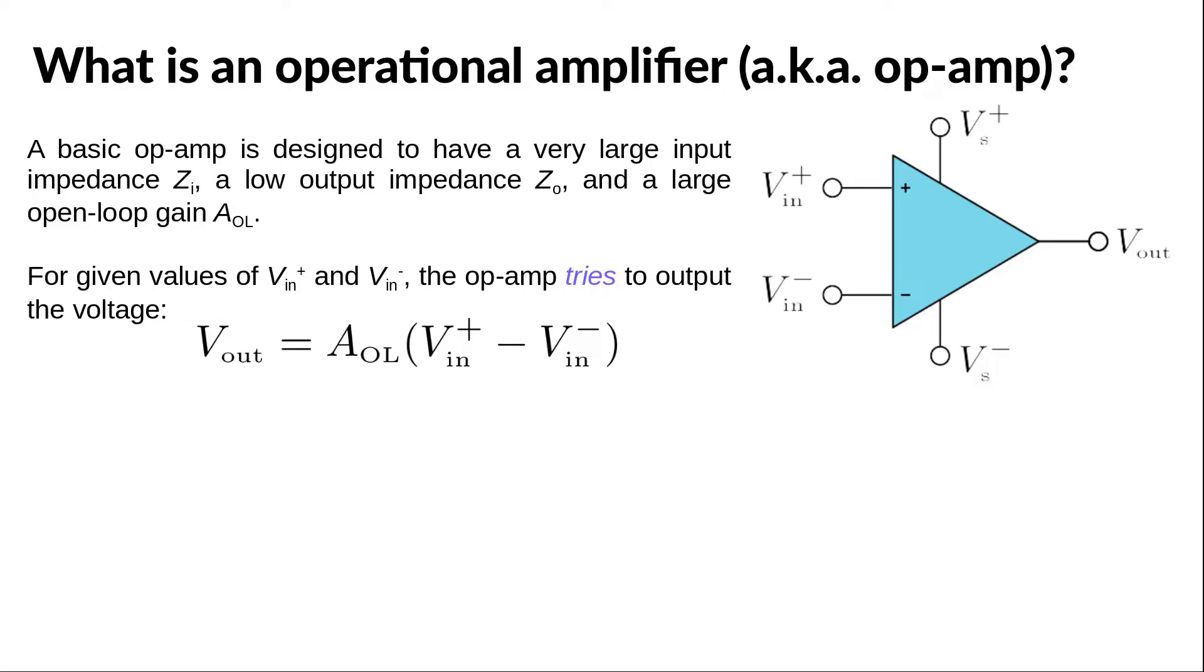We are going to see what this means. The task of the op-amp is very simple. For given input voltages, V in plus and V in minus, it tries to output a voltage equal to the difference between those voltages, multiplied by the open-loop gain A_OL.